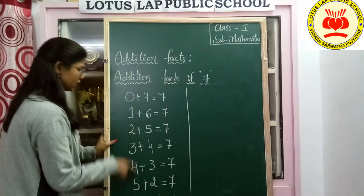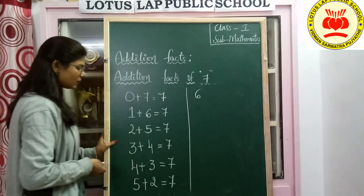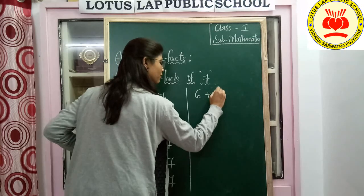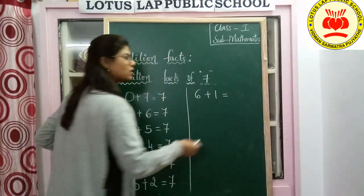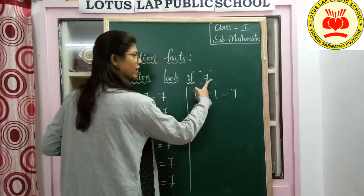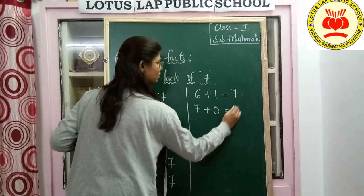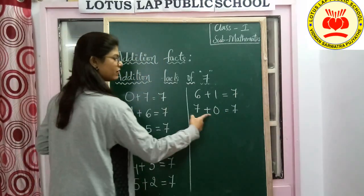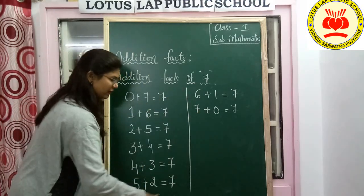5 is finished — 0, 1, 2, 3, 4, 5. Now 6. The decreasing sequence brings us to 1. 6 plus 1 gives a result of 7. 6 is finished. We can still take 7 plus 0, which gives 7. So 0 plus 7 and 7 plus 0 — the answer is 7. These are the addition facts for 7, children.